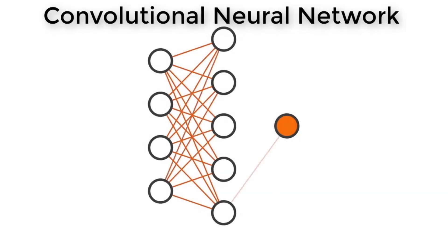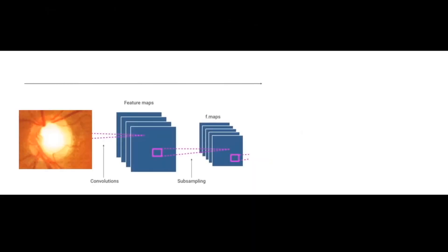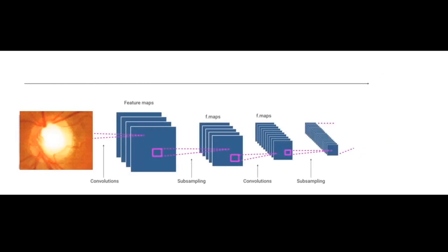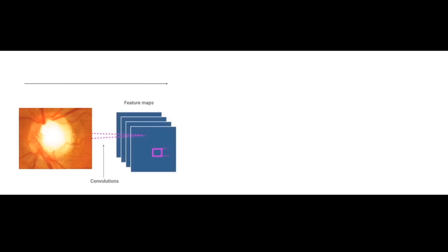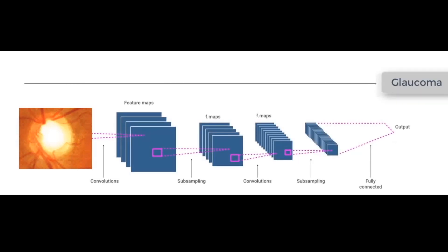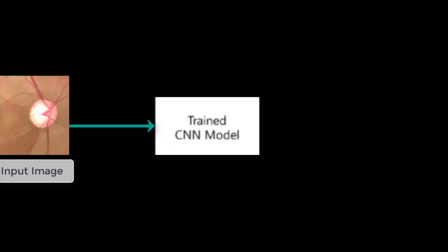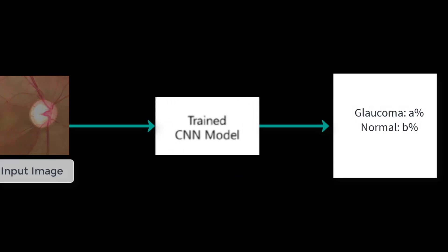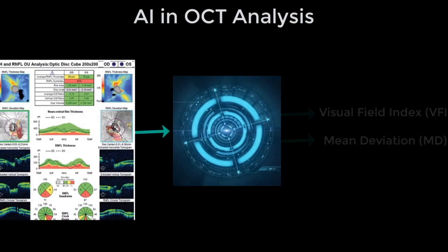How does a CNN know what to look for and if its prediction is accurate? This is done using large amounts of training data. When the CNN starts, the filter values are randomized and initial predictions make little sense. Each time the CNN makes a prediction against the training data, it uses an error function to compare how close its prediction is to the actual image. Based on this error or loss function, the CNN updates its filter values and starts the process again. Therefore, when a fundus photo is fed into a trained CNN model, it finally gives an output of whether it is glaucomatous or normal.